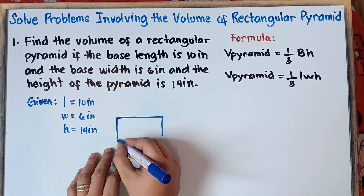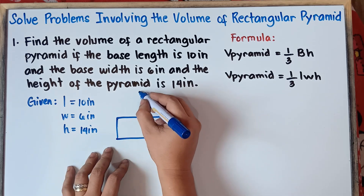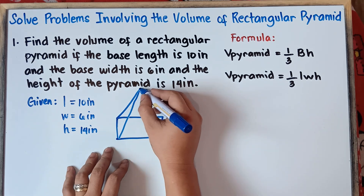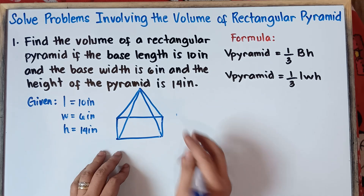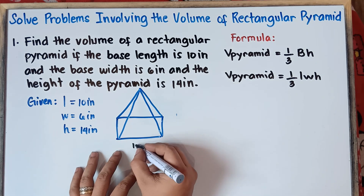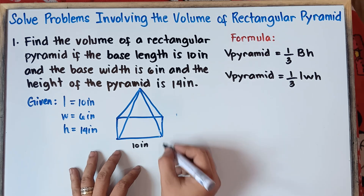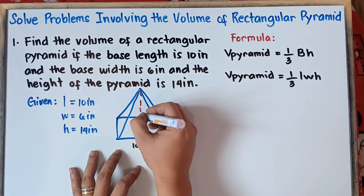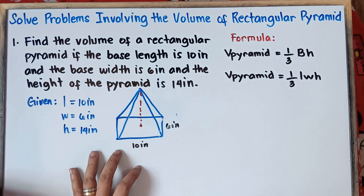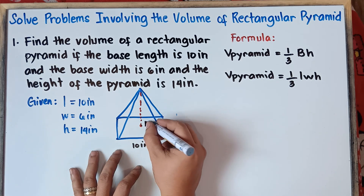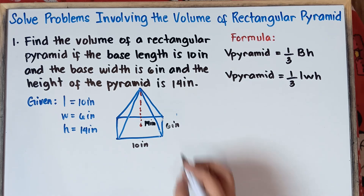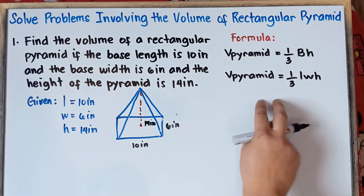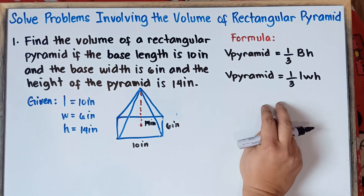So we have a rectangular pyramid. The height of this given rectangular pyramid is 14 inches, the length is 10 inches, and the width is 6 inches. Since we have given length, width, and height, we will be using the second formula.